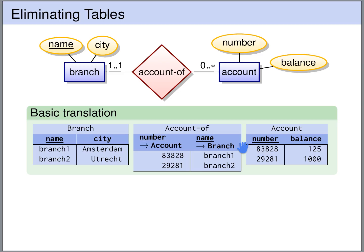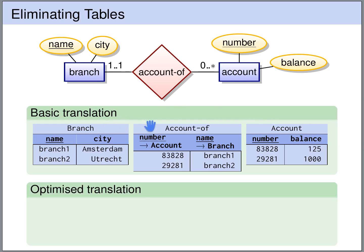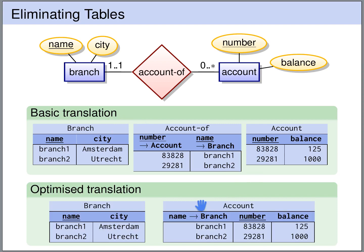Now what happens if we use the more optimized translation? We have a many to one relationship set, so we can eliminate the table for this relationship set. We extend the table for the many side, the account, with the primary key of the one side. So we eliminate the table account of and add an additional column to the account table. This additional column has a foreign key name which references the branch that this account belongs to. And since every account belongs to precisely one branch, we should declare this column as not null.